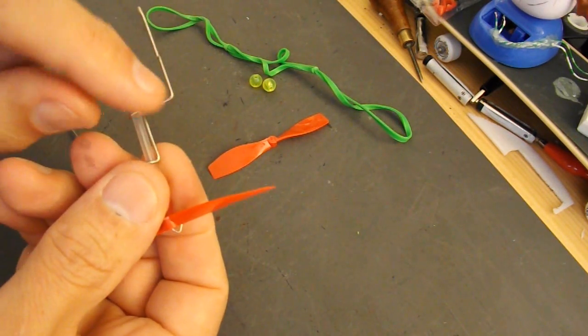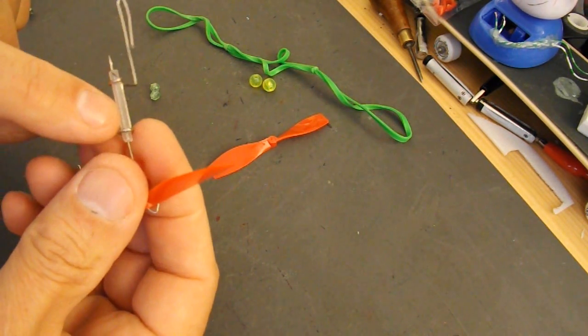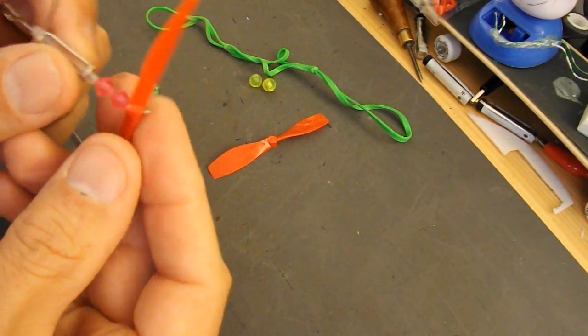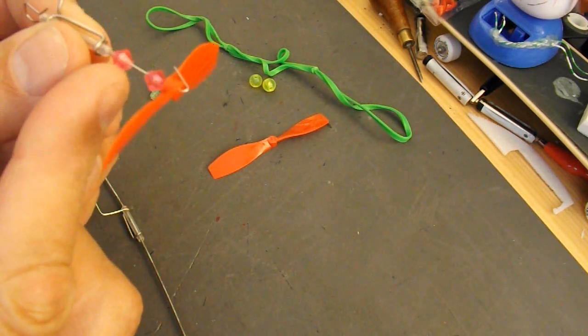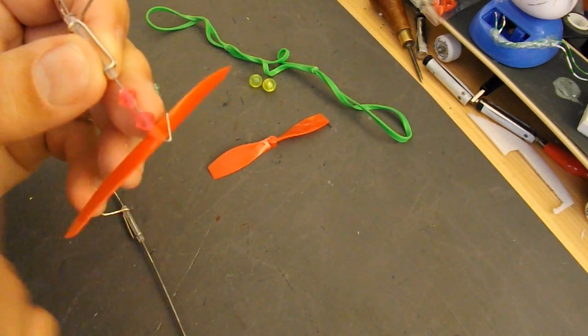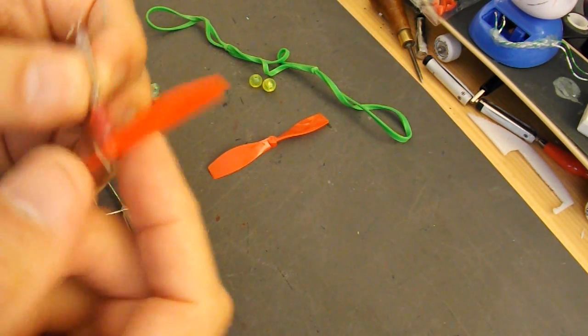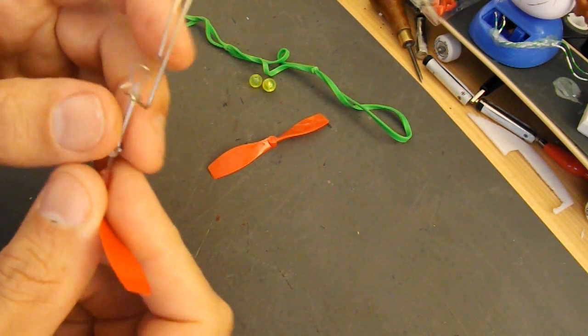So I've bent up a paper clip. I've got a little bit of plastic tubing there. A couple of plastic beads. And a bit of bent wire going through the propeller with a hook on it to go onto the rubber band.